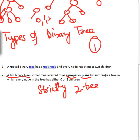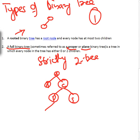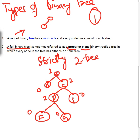A full binary tree removes the degree-one case from rooted binary trees. This means each node can have zero or two children only. For example, consider nodes A, B, C, where C has children D and E, and D has children F and G. Every node has either two children or zero children — so the degrees are two, two, zero, zero, zero. This is a strictly binary tree, also called a two-tree or full binary tree.